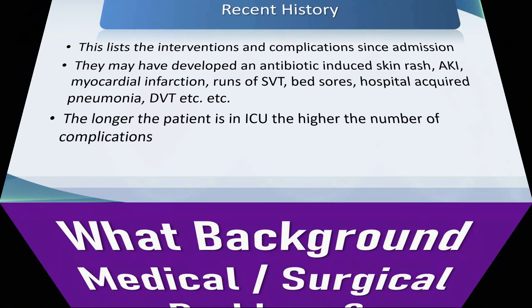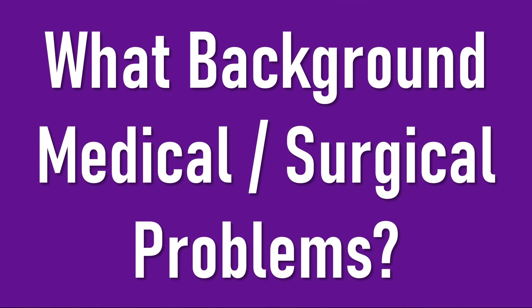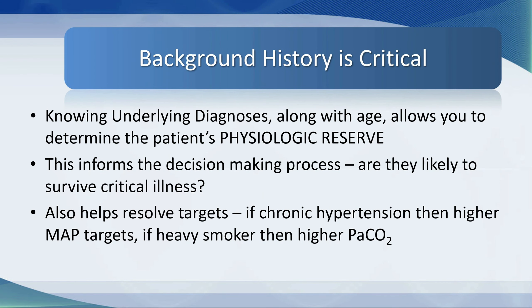We also need more background knowledge. What background medical or surgical problems does this patient have? We need a list of underlying clinical conditions, because sometimes these increase the risk of patients being in the ICU and staying in the ICU. The background history is critical. You need to know the underlying diagnosis along with the age, because that allows you to determine the patient's physiologic reserve and informs the decision-making process. Are they likely to survive critical illness? It also helps resolve targets — if, for example, the patient has chronic hypertension that's poorly controlled, then a higher mean arterial pressure target might be required.